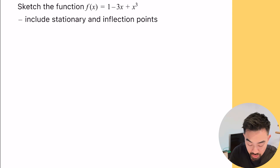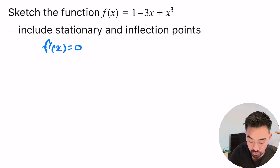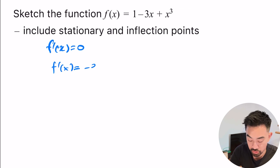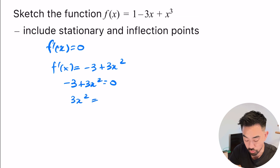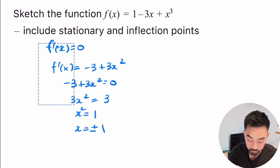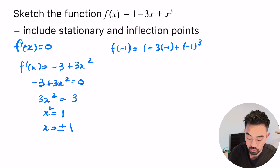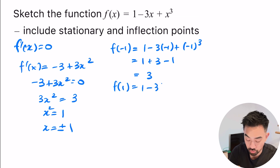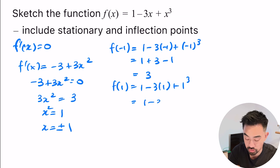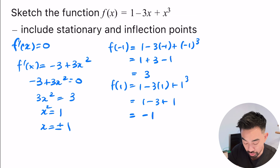First, let's find our stationary points where f'(x) equals zero. f'(x) will be negative three plus three x squared. So negative three plus three x squared equals zero; three x squared equals three; x squared equals one; so x equals plus and minus one. f(−1) equals one plus three minus one, which is three. f(1) equals one minus three plus one, which is negative one. So our coordinates are (−1, 3) and (1, −1).